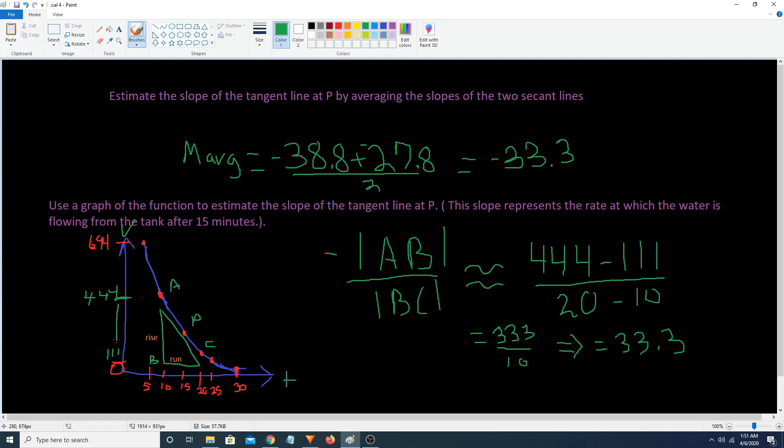If we're doing our rise over the run. We understand that. This value right here is 444. And we're subtracting 444 from 111. From this. From that. And 5. I mean 10. And 20.